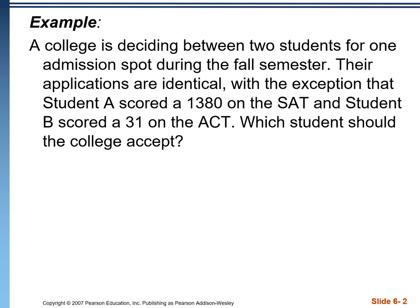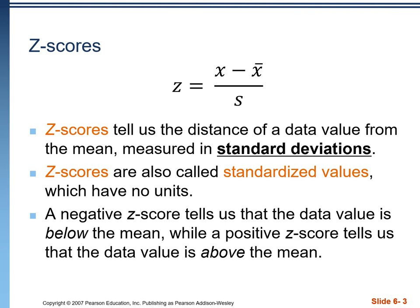Once we have the standard deviation, we can take each student's score and standardize it. When we standardize a score, we create something called a z-score. The equation is: z = (x − x̄) / s, where x is our data value, x-bar is the average, and s is the standard deviation of that variable. A z-score tells us how far a data value is from the mean, measured in standard deviations. These are called standardized values and have no units. A negative z-score means a data value is below the mean; a positive z-score means it is above the mean.